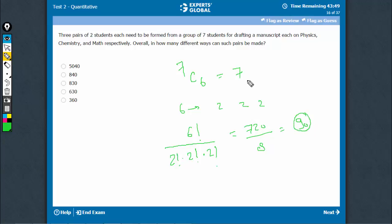So, there were seven ways of selecting the six students out of seven. And these six can be converted into pairs in 90 ways. So, total number of cases would be 7 into 90, that is 630. So, the correct answer is D.